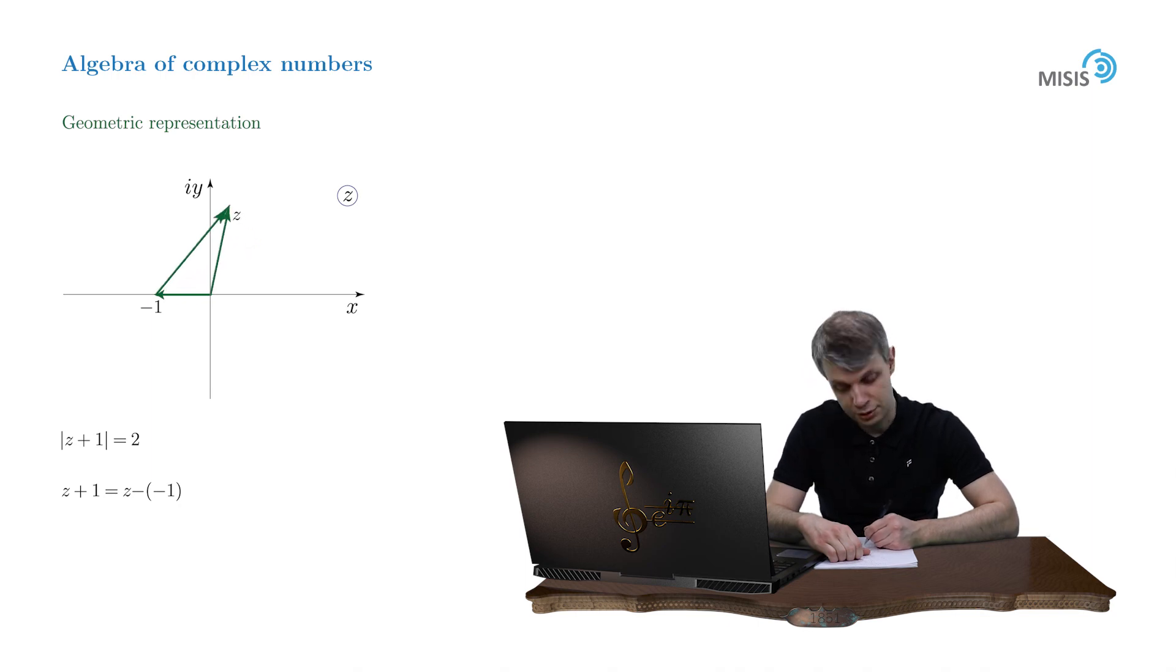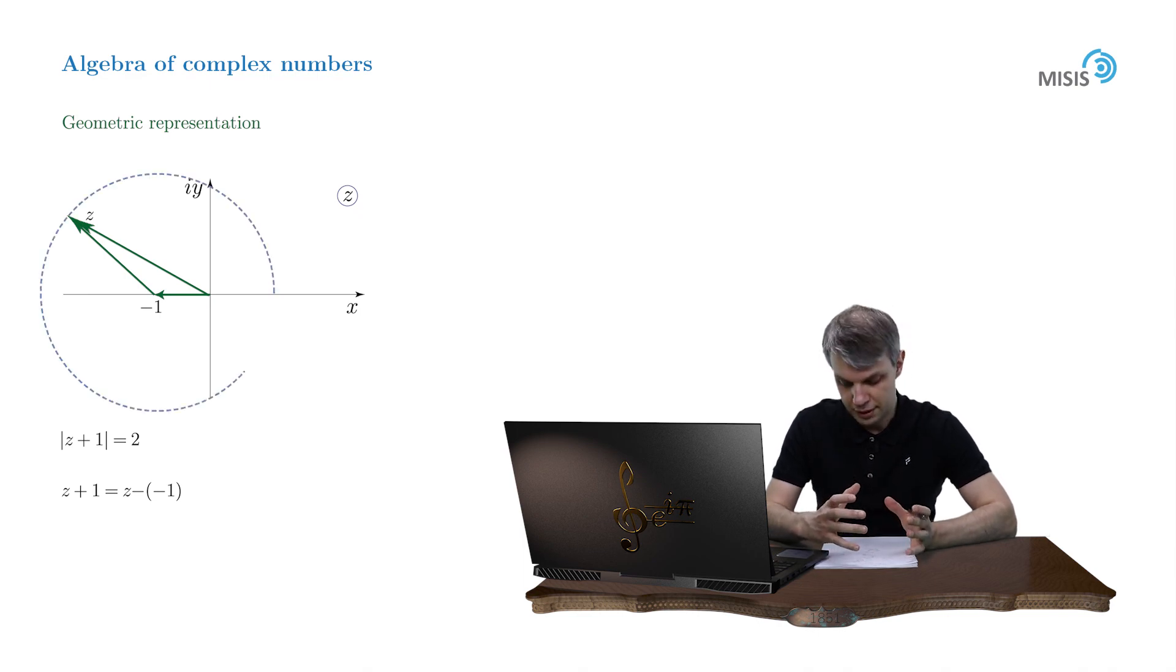So basically what we have here is a rotating arrow with the origin at point negative 1. And the modulus should be equal to 2. So what we obtain is a circle with radius 2 with the center at point negative 1. And of course, you may solve the same problem with algebraic means.